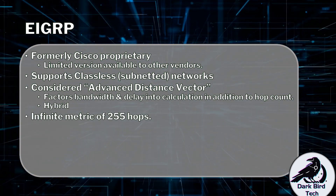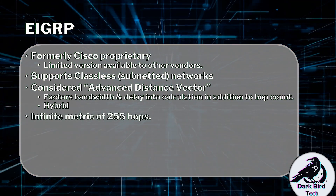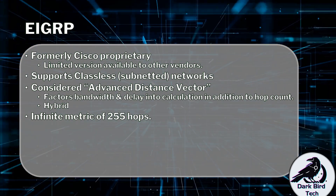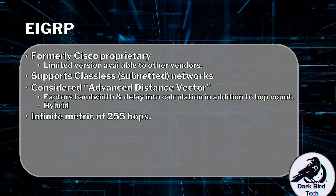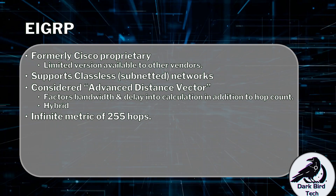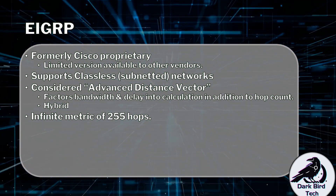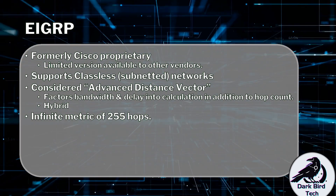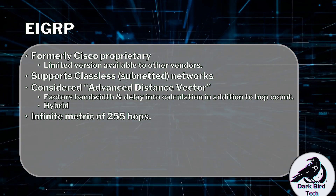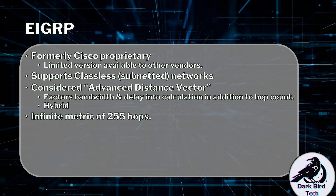EIGRP has an infinite metric of 255 hops. OSPF technically has no hop limit — it only ignores a link when there's no transmission at all. With EIGRP's 255 hop limit, remember that IPv4 packets have a TTL field starting at 255, so EIGRP gets you through the full TTL range. And honestly, if you've got 255 routers between you and a subnet within your organization, you probably need to simplify your network infrastructure.